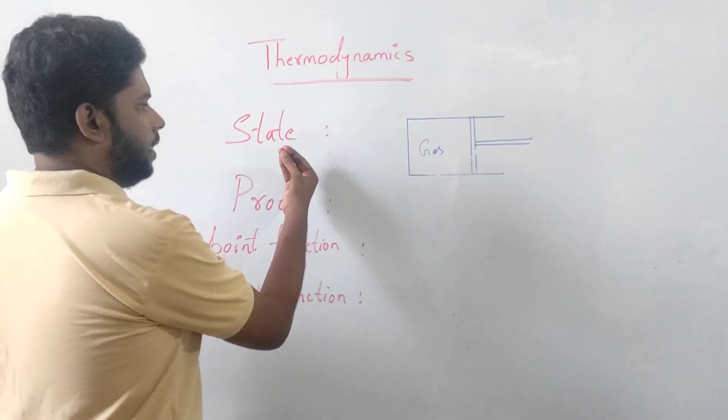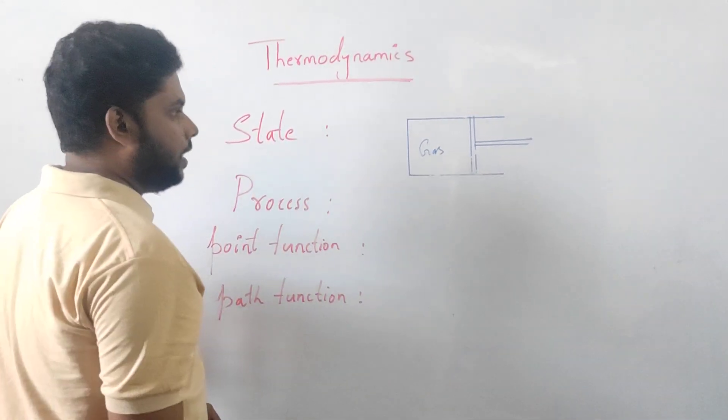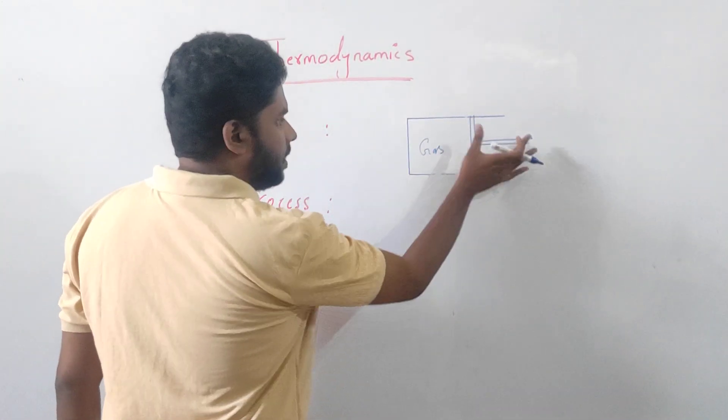In the last video we have seen what is system, types of systems, surrounding and boundary. So state is the system's condition. What does it mean? We have a piston cylinder arrangement.